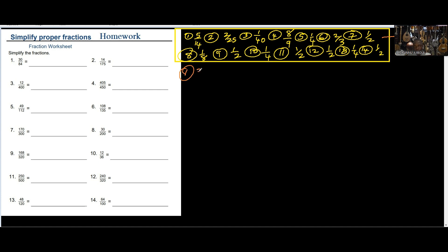Number one, we have 30 over 84. We're going to look for numbers to divide it until no number can divide both the numerator and denominator. I can use small numbers. So dividing by 2: at the top I'm going to have 15, and at the bottom I'm going to have 42. 2 into 30 gives 15, 2 into 84 gives 42.